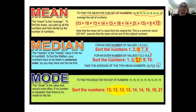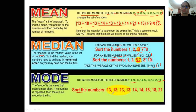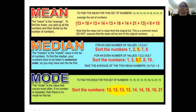For the mode, the mode is the value that occurs most often. If no number is repeated, then there is no mode for the list. After sorting the numbers, you find that 13 occurs most frequently — so the mode is 13. It is possible to have two modes (bimodal), three modes (trimodal), or more than three modes (multimodal).